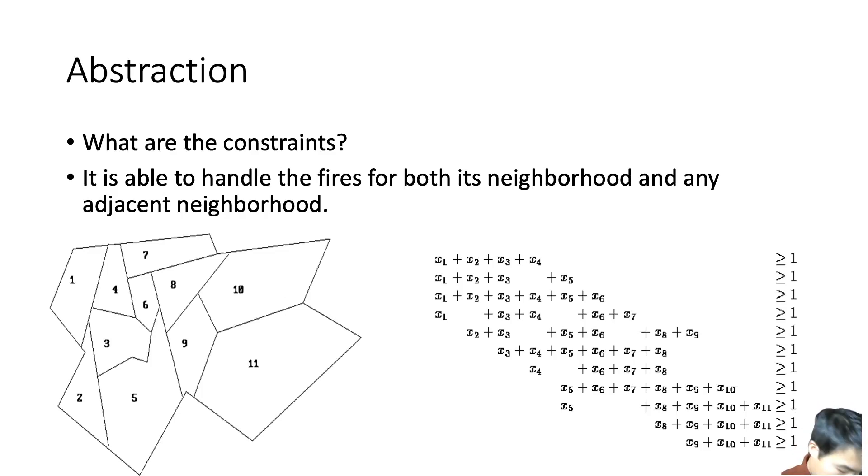What are the constraints? Another major component of math modeling is constraints. We created a simple rule: a fire station is able to handle fires for both its neighborhood and any adjacent neighborhood. For example, if I place fire station one, we don't have to place fire stations at two, three, or four. Mathematically, this is written as X1 + X2 + X3 + X4 greater than or equal to one. Basically, for the region of neighborhoods one, two, three, four, we want to have at least one fire station. Similarly, for neighborhood two, X1 + X2 + X3 + X5 is going to be at least one, greater than or equal to one.